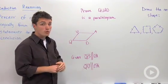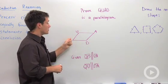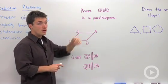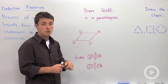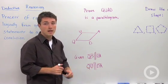let's say I asked you to prove that this quadrilateral QUAD is a parallelogram, and I told you that QD is parallel to UA and that QU is parallel to DA.